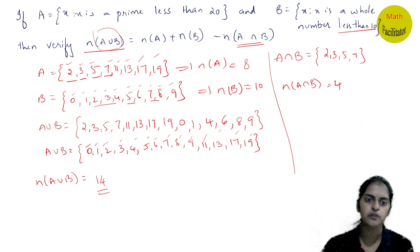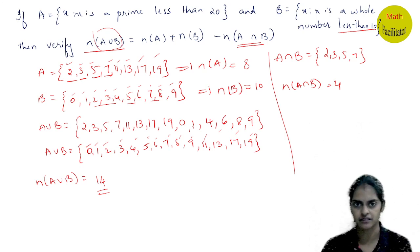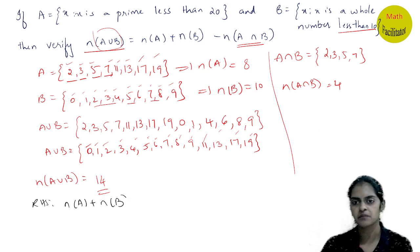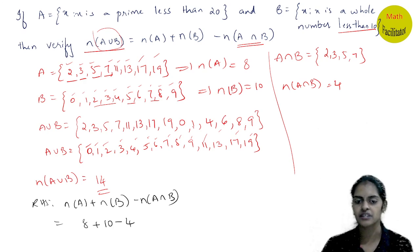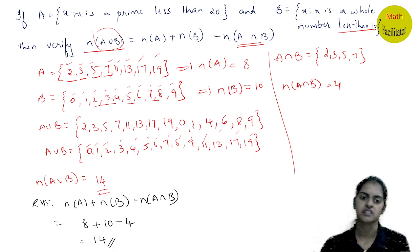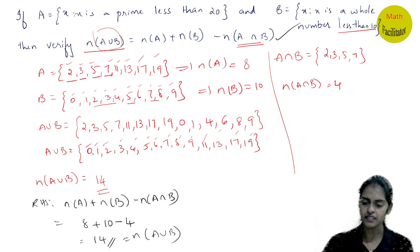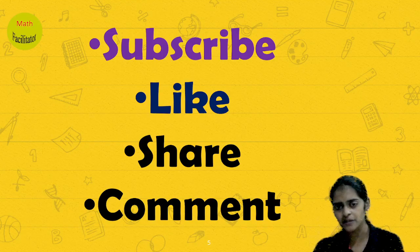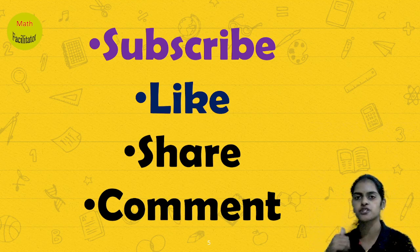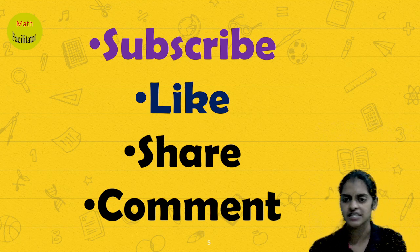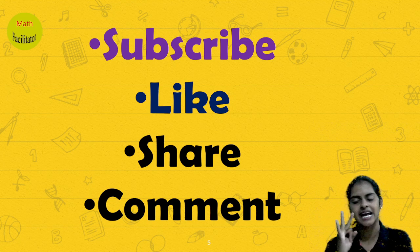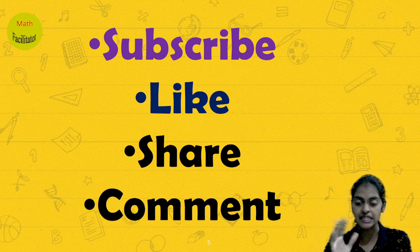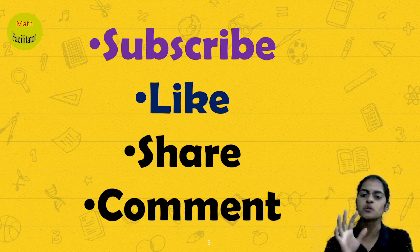Now we prove the formula: n(A ∪ B) = n(A) + n(B) − n(A ∩ B). n(A) = 8, n(B) = 10, n(A ∩ B) = 4. So 8 + 10 − 4 = 14, which equals n(A ∪ B). Hence proved. These are the very important models covering set builder form, roster form, and operations on sets: union, intersection, and difference.